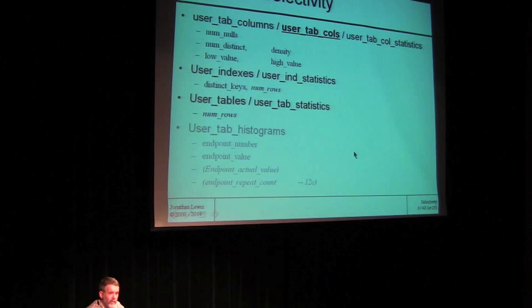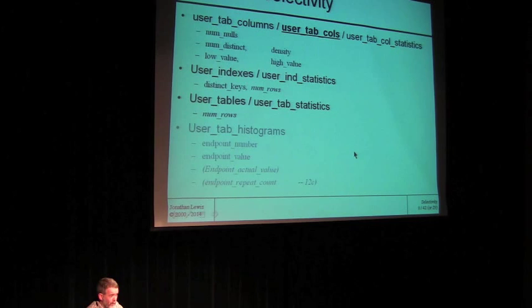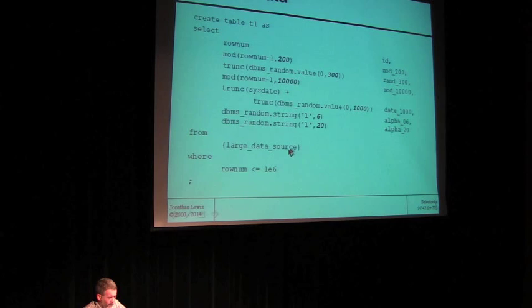User_tab_histograms is the place you would look to see if you've got histogram data and what it looks like. I've just listed the relevant columns from there, picking out a note about a new column that comes in in 12c, where Oracle introduces two new types of histogram — one type being a much more informative type, and the other being a much more efficient way of gathering the classic frequency histograms. So that's the numbers Oracle will be looking at. Let's take a sample data set to demonstrate some of the arithmetic.